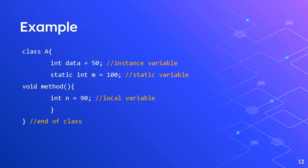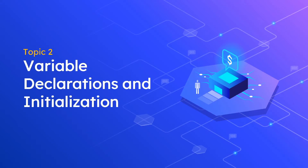Next is an example of the types of variables. Look at the second line: 'int data = 50' — that is the instance variable. The static variable is 'static int m = 100' — it became static because of the 'static' keyword. The last one is the local variable: 'int n = 90' — that is the typical variable you declare inside a method. Next is topic two: variable declarations and initialization.